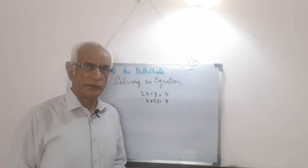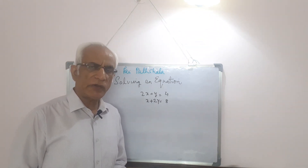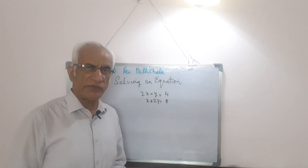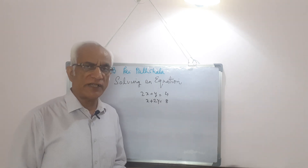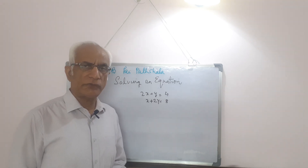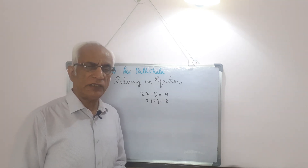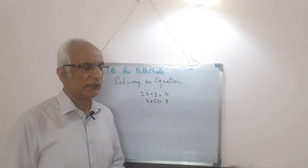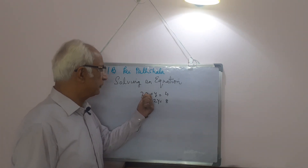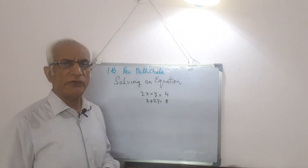Whenever we have to solve equations in two variables, we need two equations. You can't solve an equation which has two variables if you have only one equation — you must have two equations to solve them and find the value of both variables.